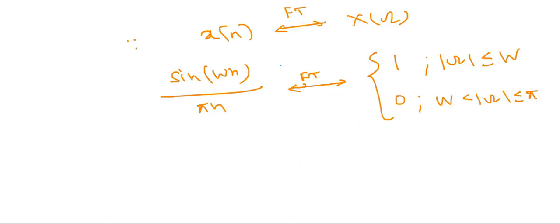So we know that x(n) has a Fourier transform X(ω). This is the DTFT and DTFT is periodic with period 2π. So the Fourier transform or DTFT of this sin(ωn) by πn will be 1 in the interval from -ω to +ω and 0 otherwise. So this is the X(ω).